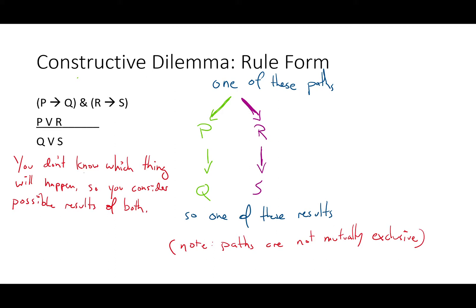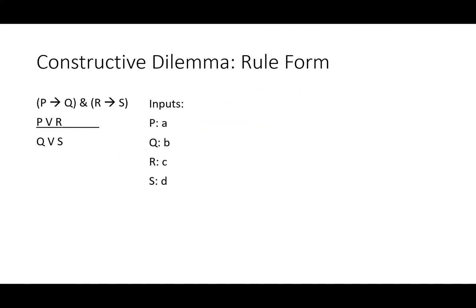This is the kind of thinking you do when you don't know which thing is going to happen, so you consider the possible results of both. We can substitute A, B, C, and D for P, Q, R, and S, and we get: if A then B, and if C then D, A or C, therefore B or D.